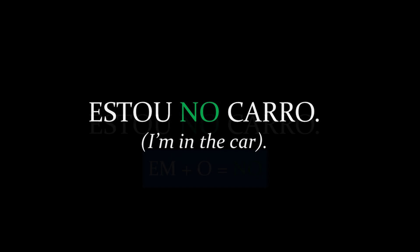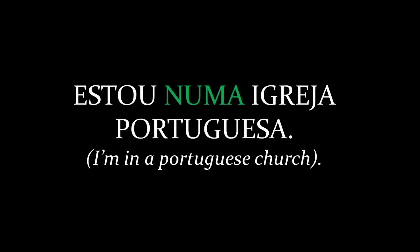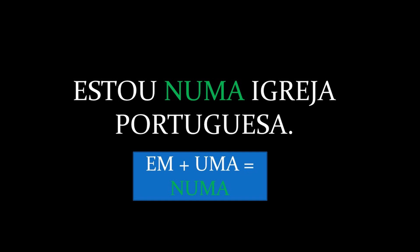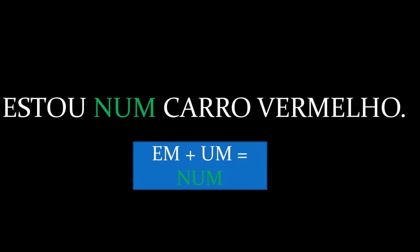Estou no carro. Preposition em joins with definite article o, which gives no. Preposition em can also join with indefinite articles. For example, estou numa igreja portuguesa — preposition em joins with indefinite article uma, which gives numa. Estou num carro vermelho — preposition em joins with indefinite masculine article um, which gives num.